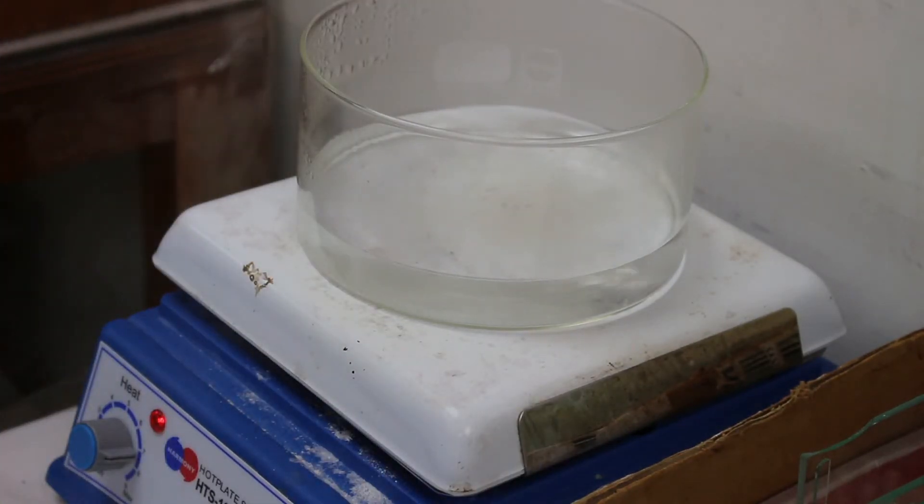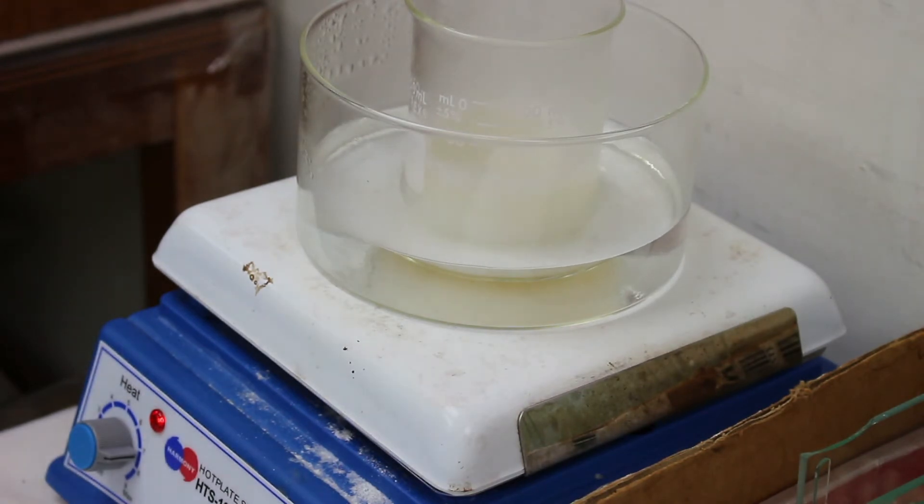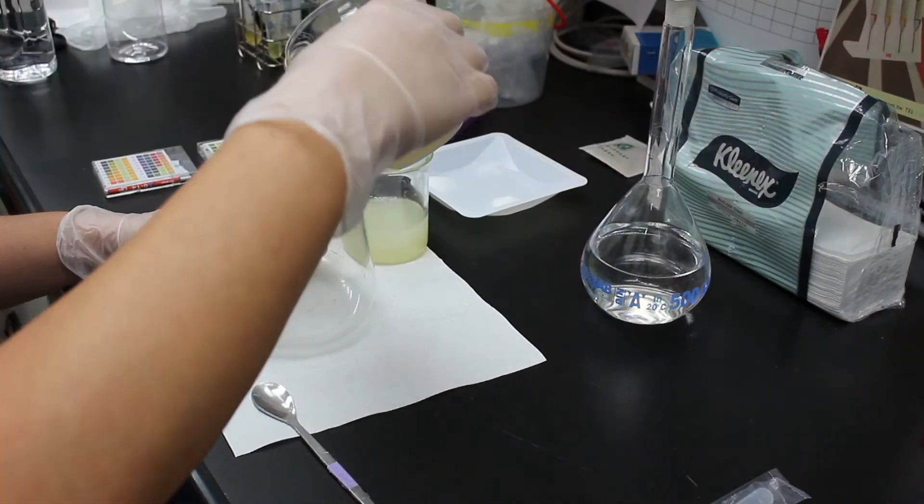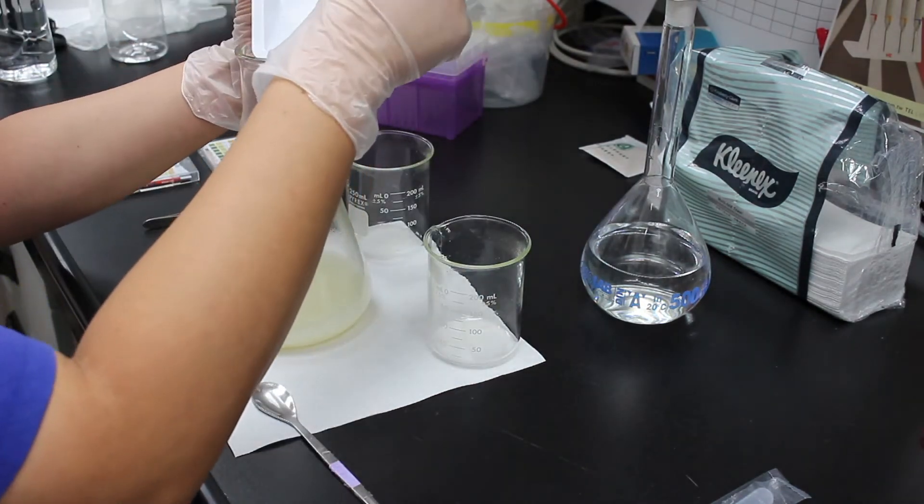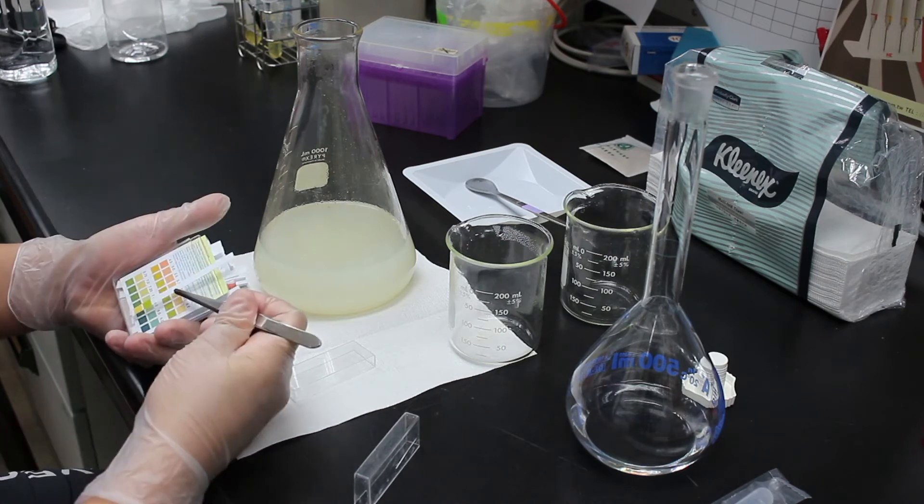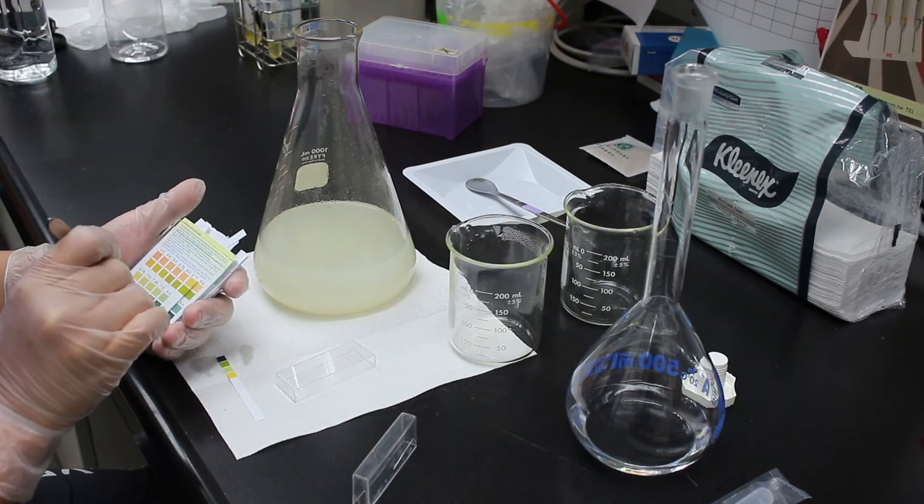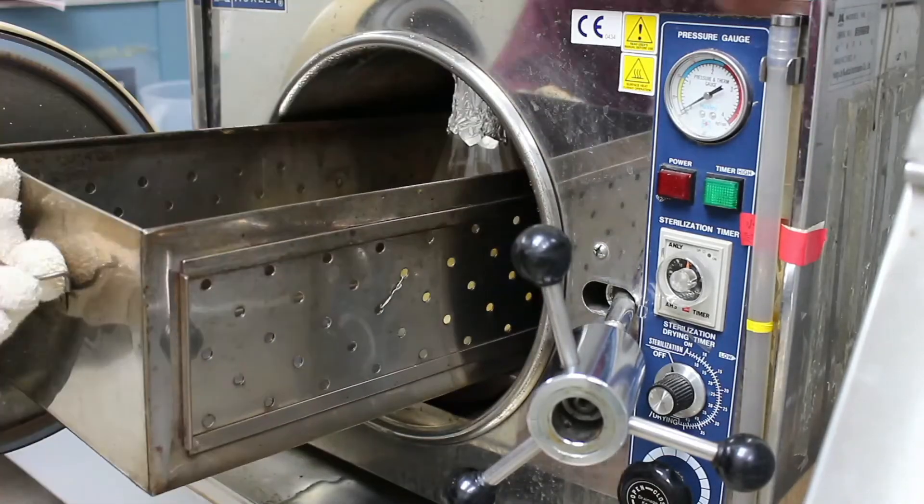When the reaction time reaches what I planned, I heat the solution for 15 minutes to inactivate the enzyme. Then I mix the solution with all the other ingredients and adjust the pH value to around 7.5. After that, all I need to do is autoclave the medium.